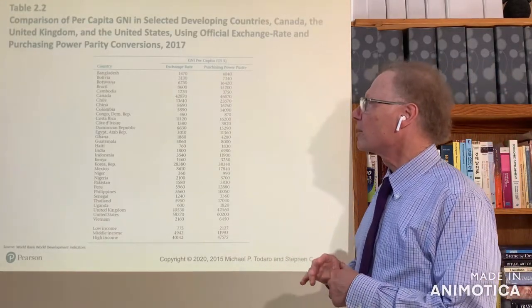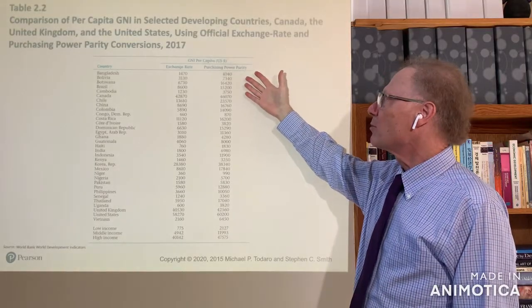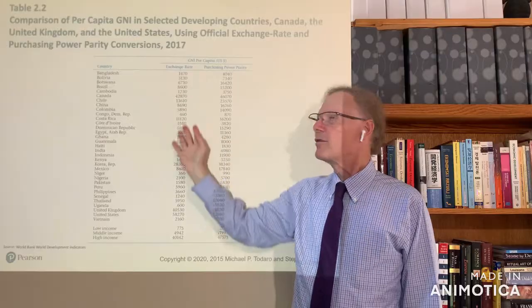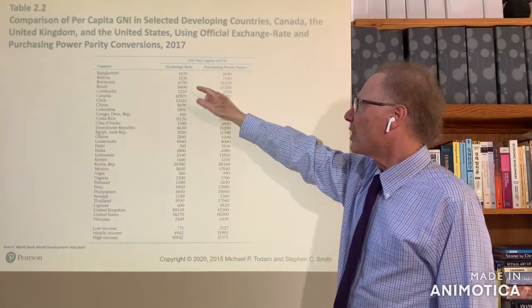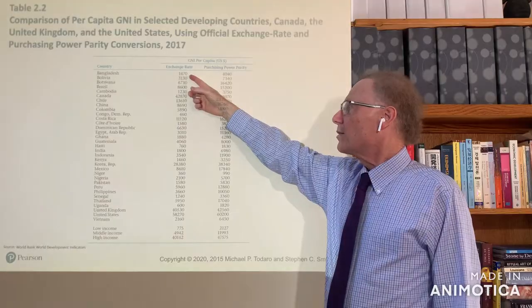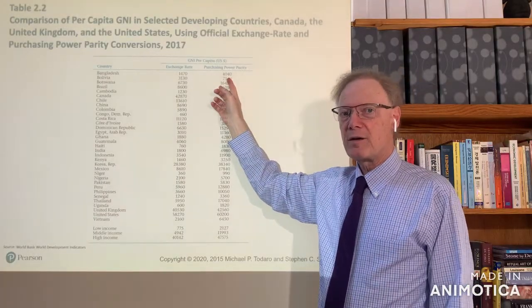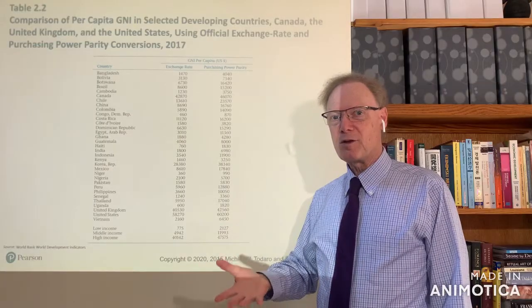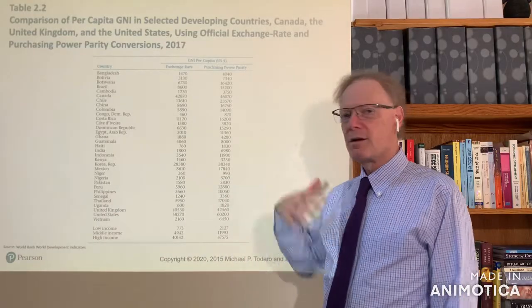To conclude, I'll point your attention to table 2.2 in the text, which compares a number of countries between their exchange-rate-derived income per capita and their purchasing power parity income. Bangladesh is first on the list: their exchange rate income per capita is about $1,470, but at purchasing power parity it's a little over $4,000 — a little more than two and a half times higher. The country remains lower-middle income, but it shows that actual average living standards are not as bad as they might otherwise look once we take this adjustment into account.